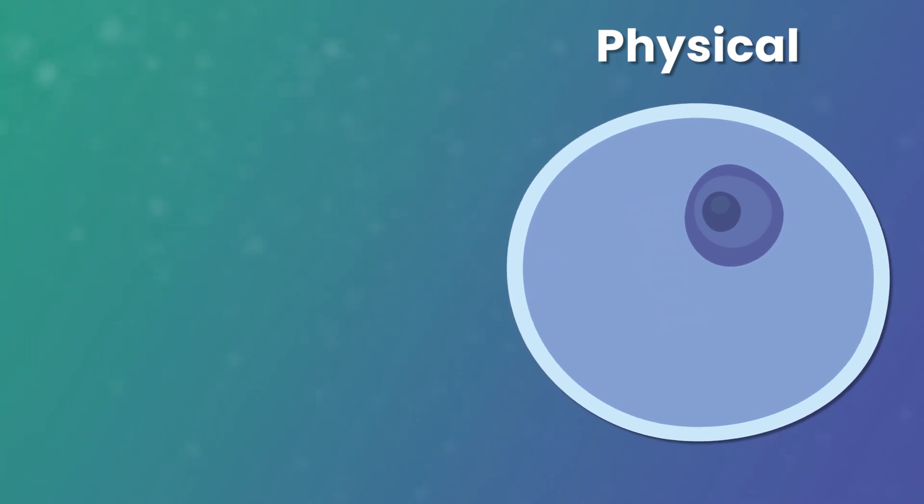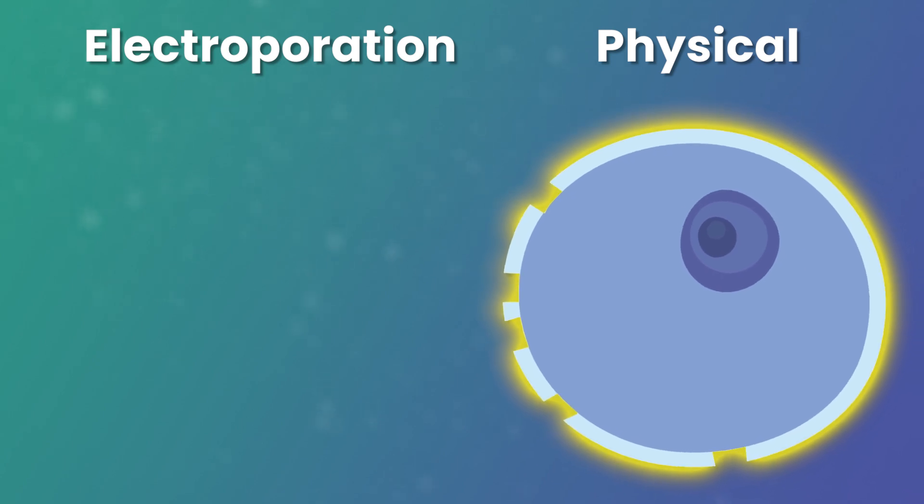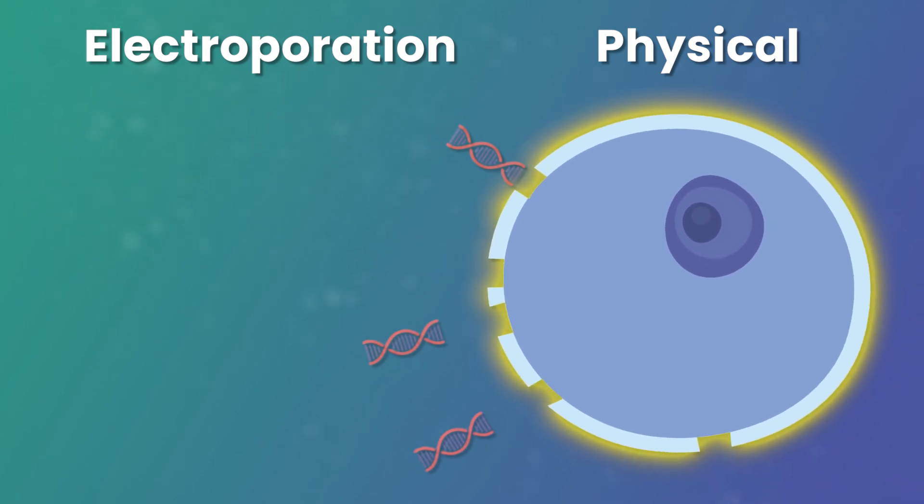Another physical method, electroporation, uses high voltage electric shocks to disrupt the membrane, leading to the formation of pores through which the nucleic acids can enter.